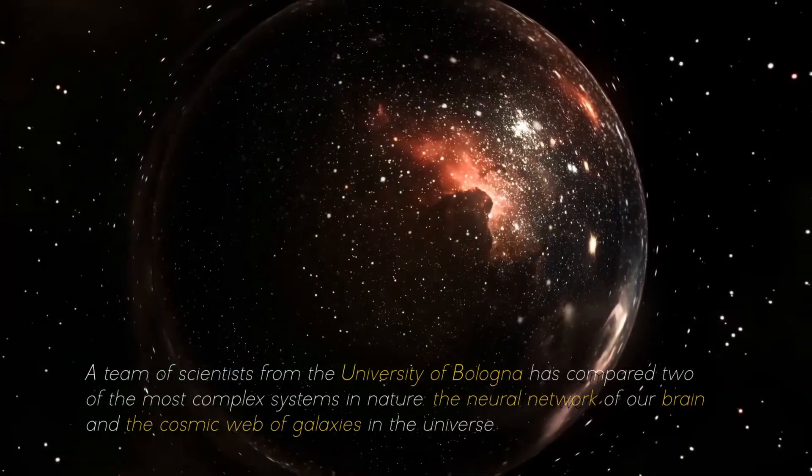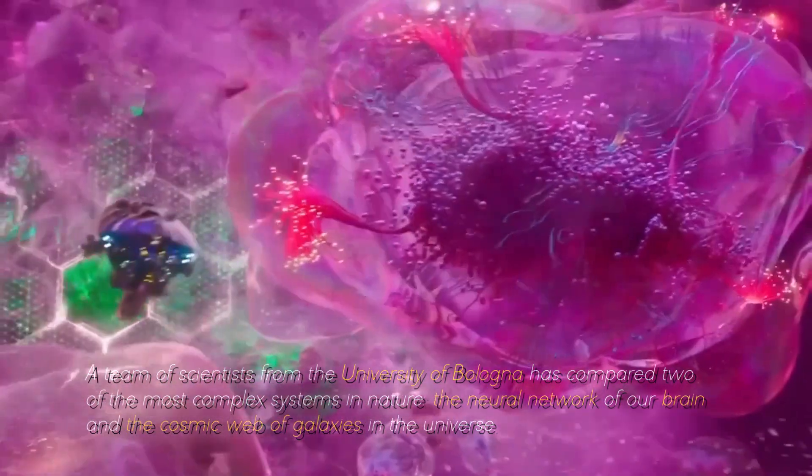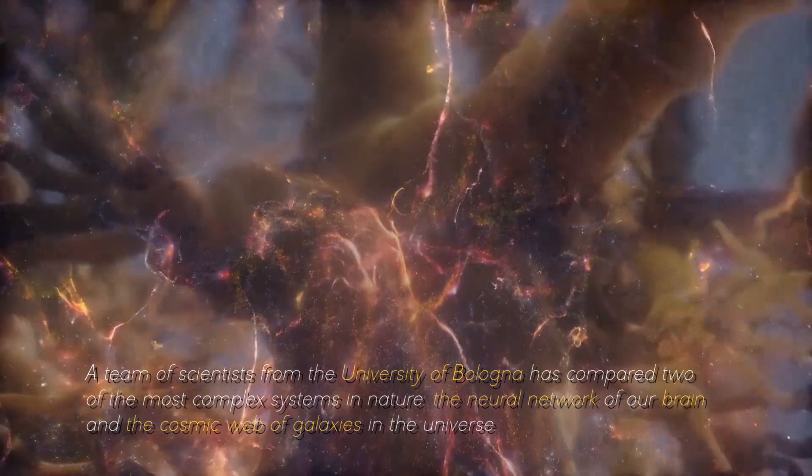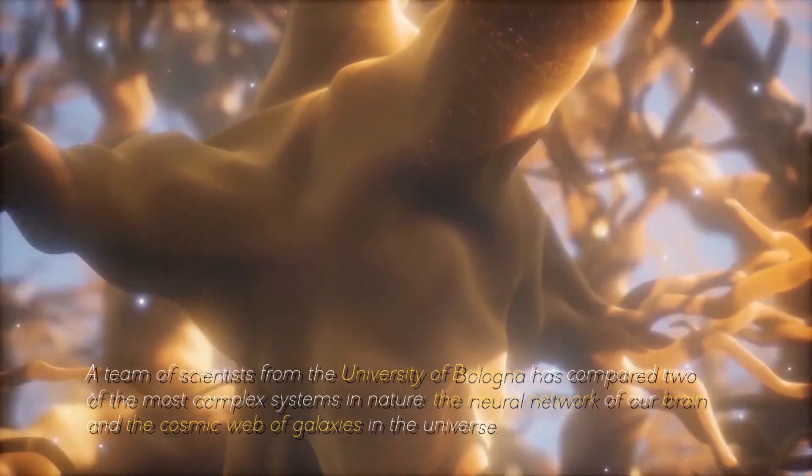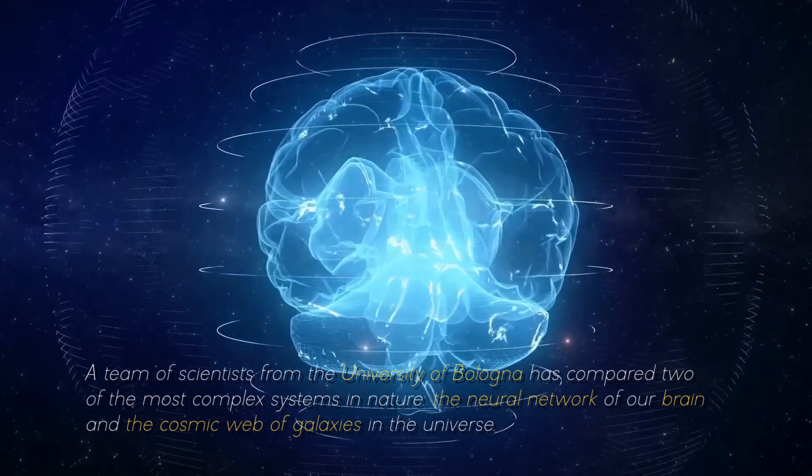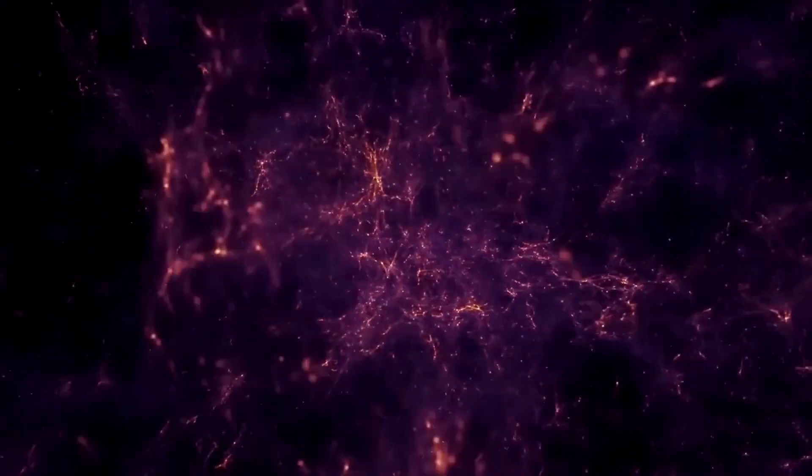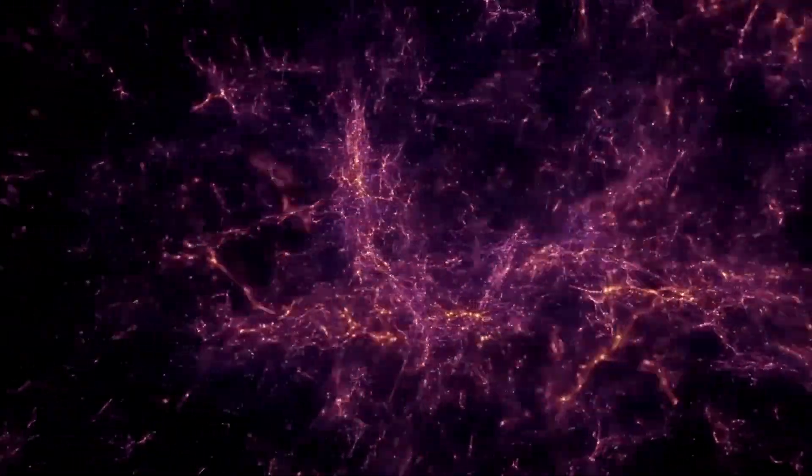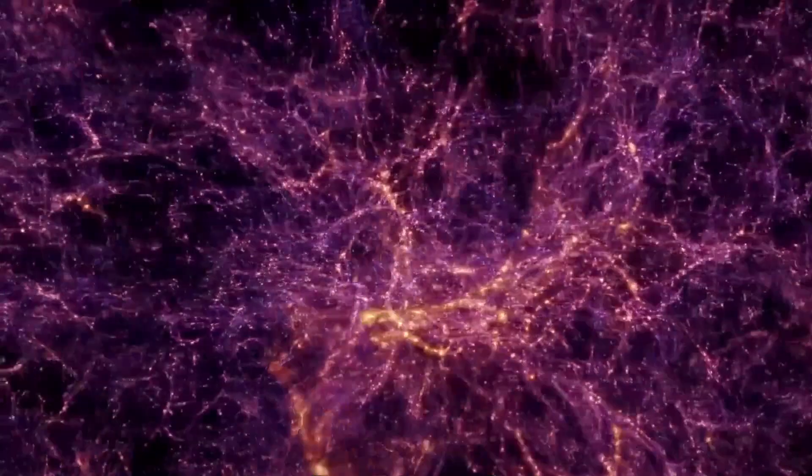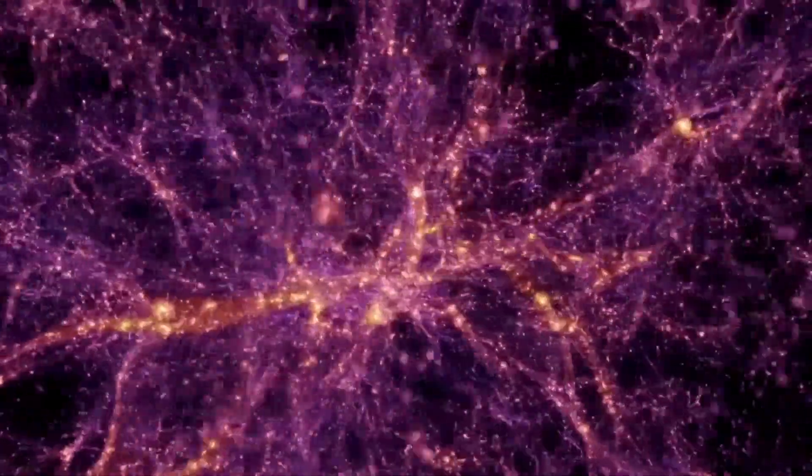A team of scientists from the University of Bologna has compared two of the most complex systems in nature, the neural network of our brain and the cosmic web of galaxies in the universe. What did they discover? That they are incredibly similar. And not just as they look if we compare a human neuron with a cluster of galaxies. There's more.